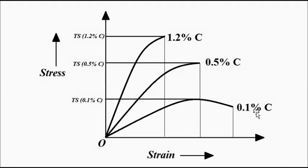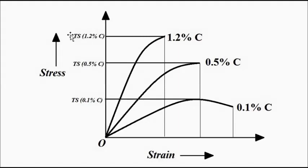For the low carbon content curve at 0.1%, drawing a horizontal line from the peak gives the tensile strength. At 0.5% carbon, the peak point and corresponding tensile strength are higher. At 1.2% carbon, the tensile strength is higher still. So tensile strength clearly increases with increasing carbon concentration: lowest at 0.1%, higher at 0.5%, and highest at 1.2%.